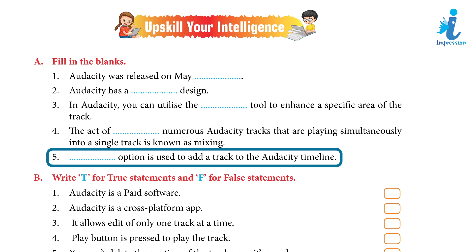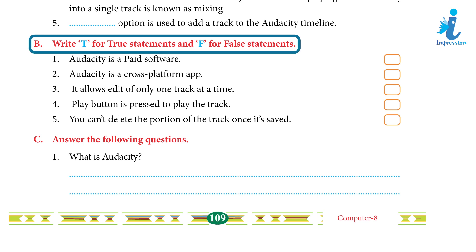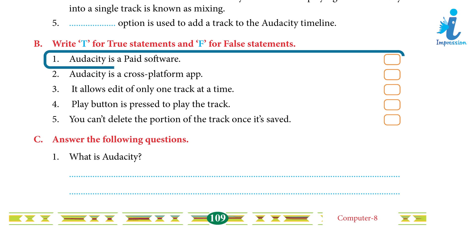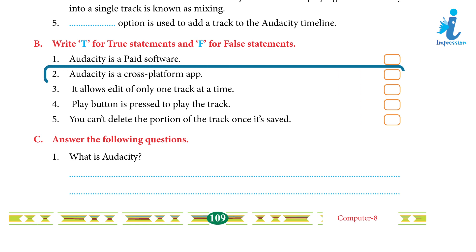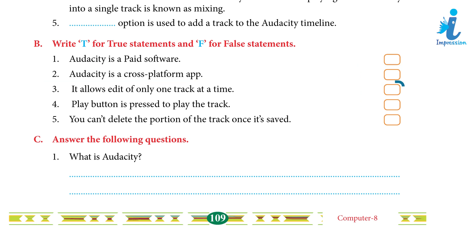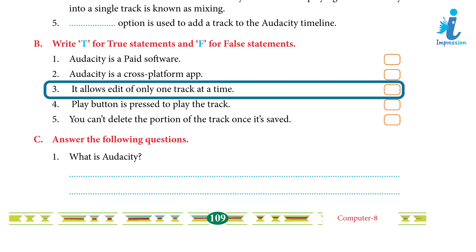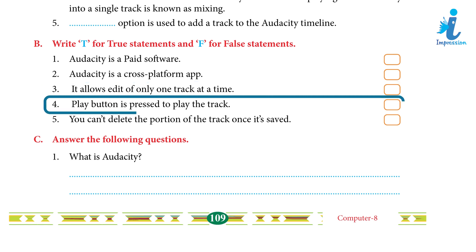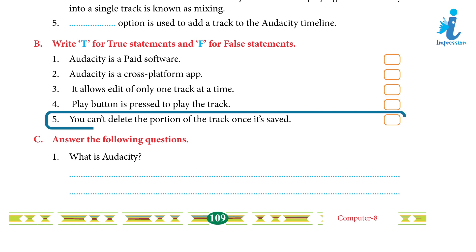B. Write T for true statements and F for false statements: 1. Audacity is a paid software. Answer: False. 2. Audacity is a cross-platform app. Answer: True. 3. It allows editing of only one track at a time. Answer: False. 4. Play button is pressed to play the track. Answer: True. 5. You can delete the portion of the track once it's saved. Answer: False.